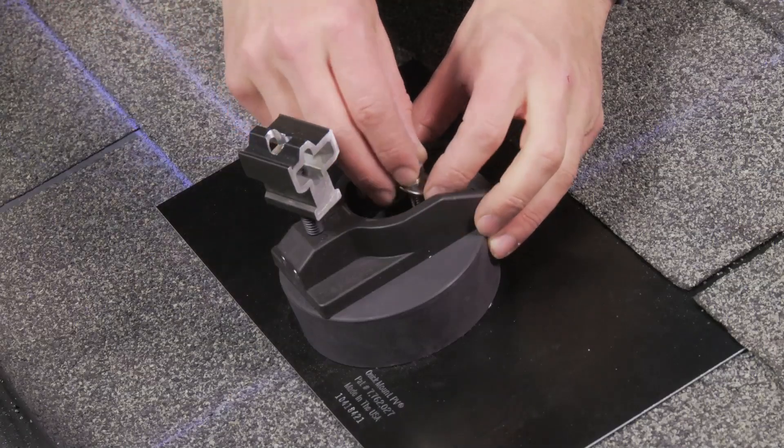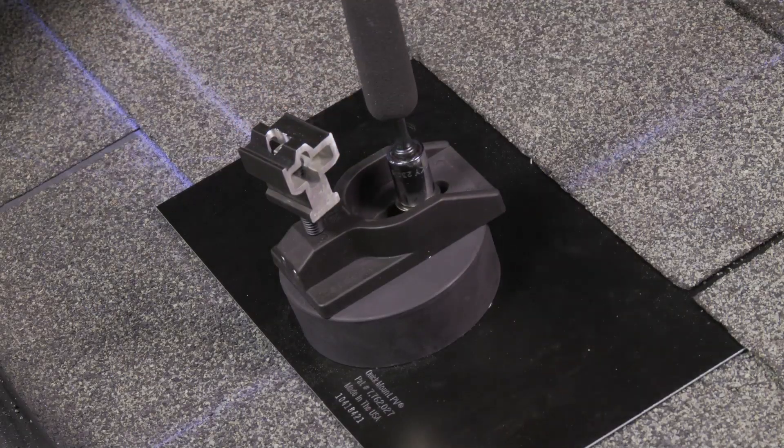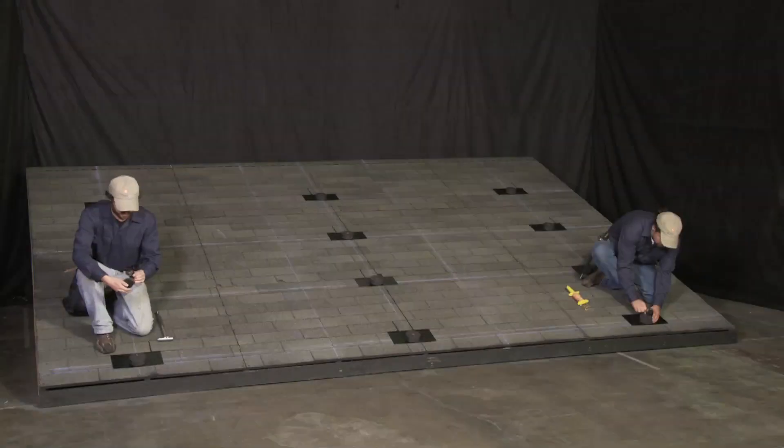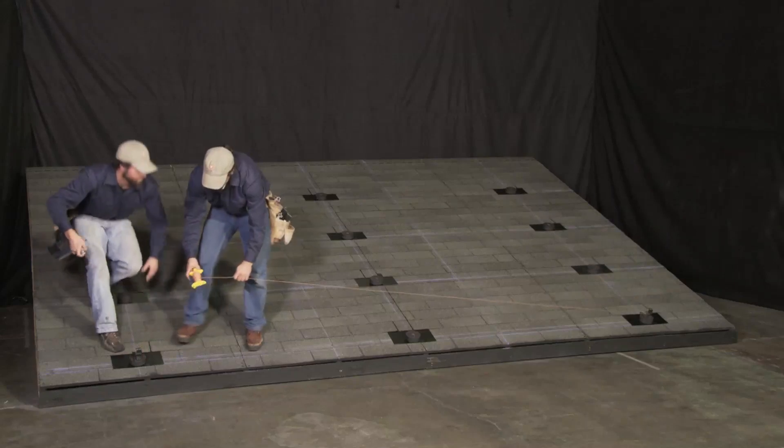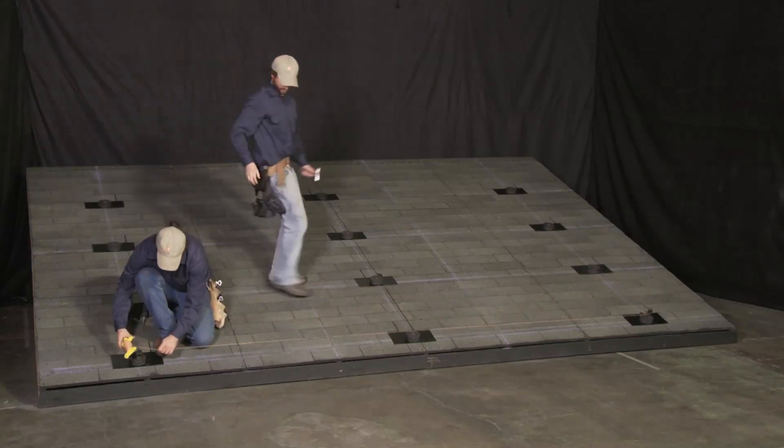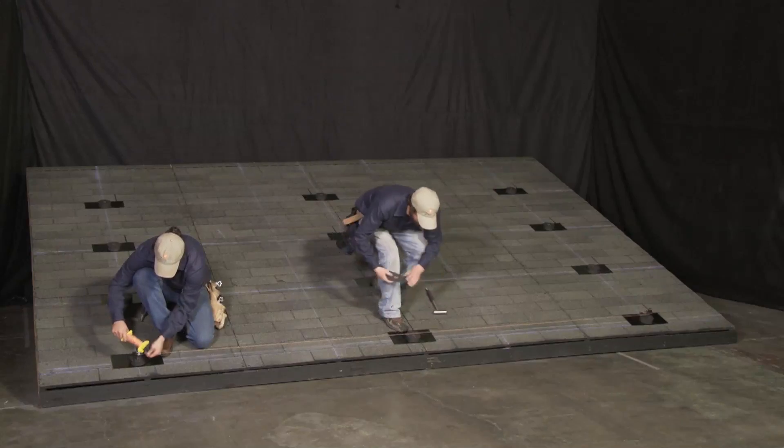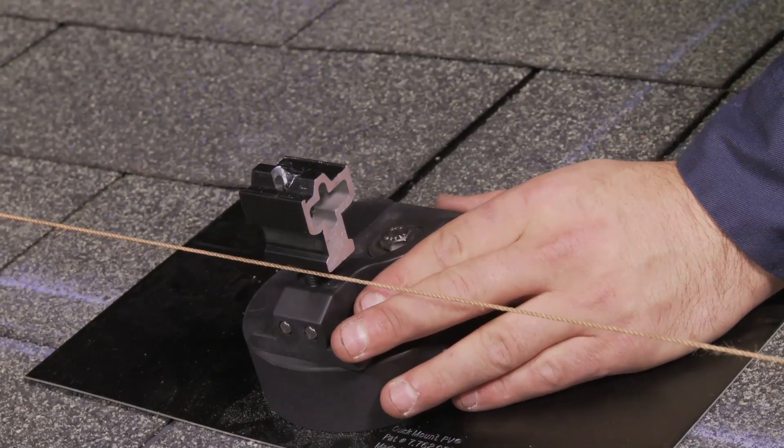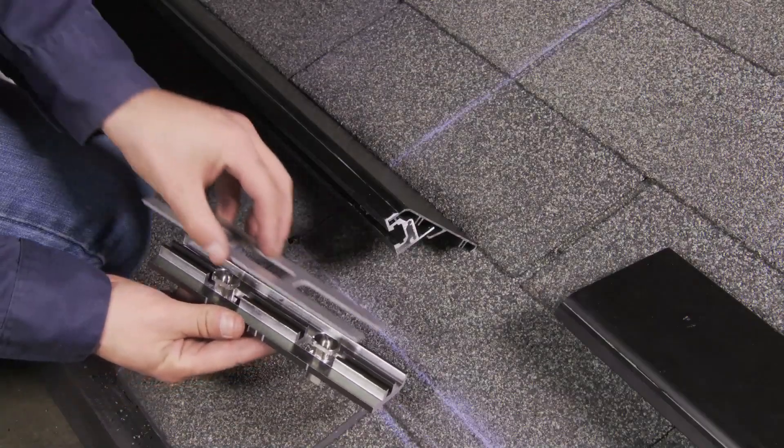After all of the comp mounts have been secured, the front row leveling feet are installed. To install a leveling foot, it is placed squarely on the comp mount base and secured with a machine screw. First, attach the eastmost and westmost leveling feet and run a string line between them. Then, install the remaining front row leveling feet using the string line to ensure that the front row is straight. This string can also be used to ensure that the tops of each leveling foot are relatively level.